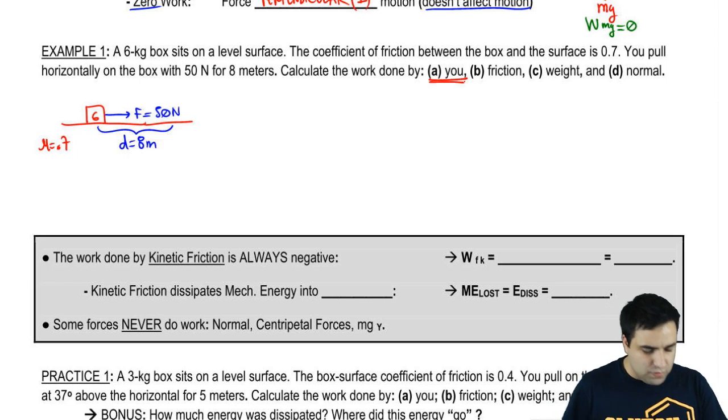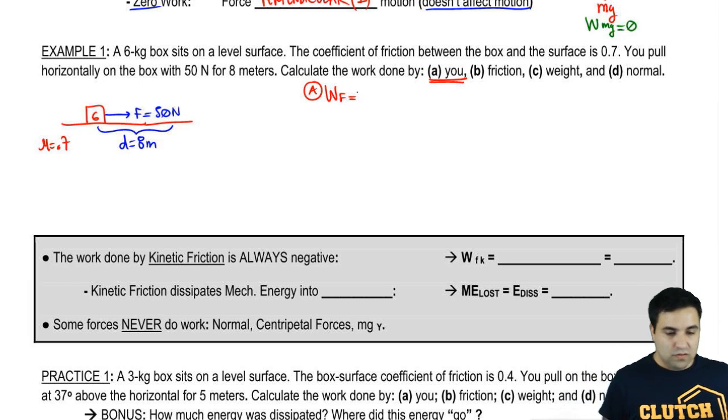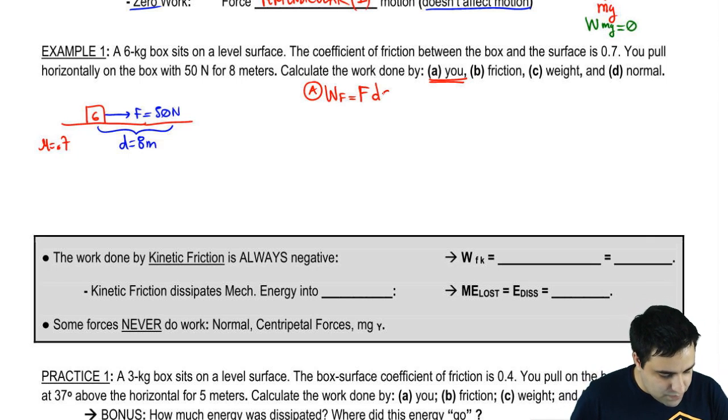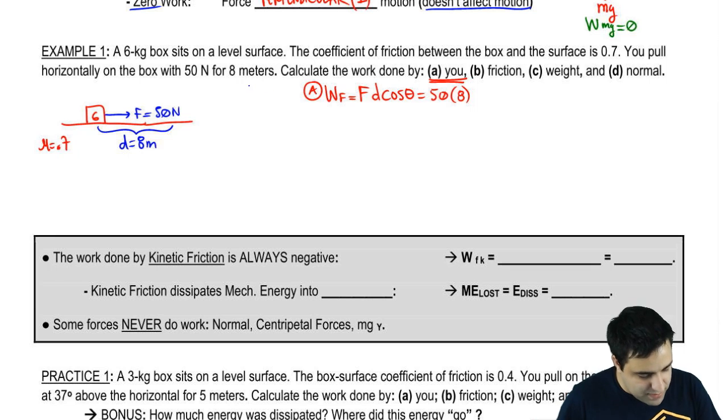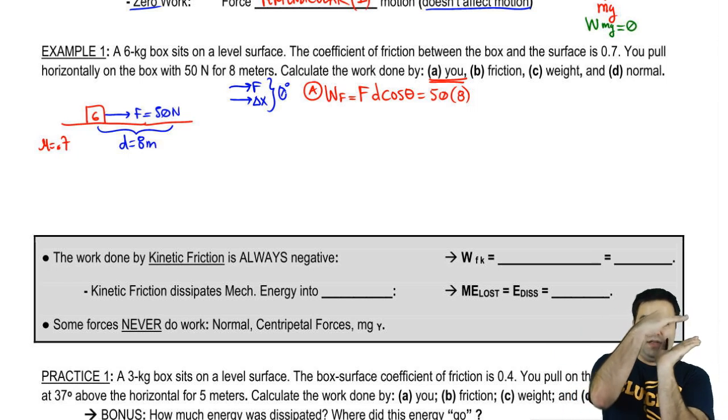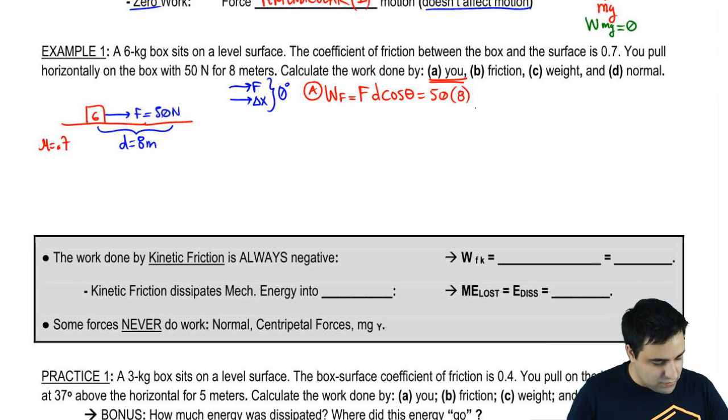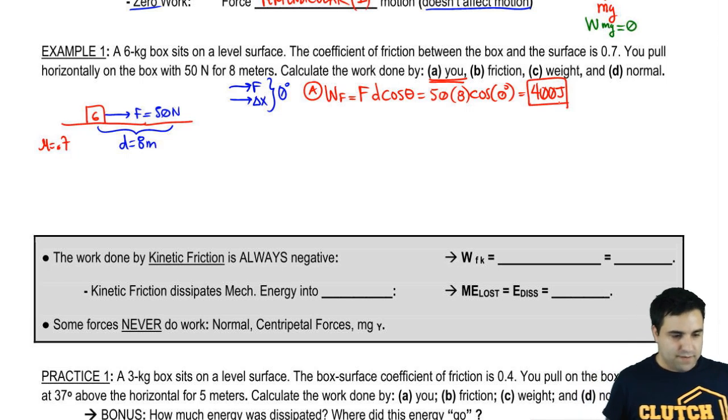I want to know what is the work done by you—this means the work done by F. Work done by you means work done by F. This is F·d·cosine of theta. Your force is 50, the distance is 8. What about the direction? I'm pulling this way and it moves this way. The angle between these two, since they're parallel to each other, is 0. So this is going to be cosine of 0, and here you get 400 joules.